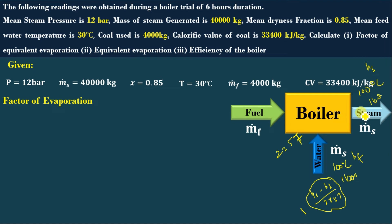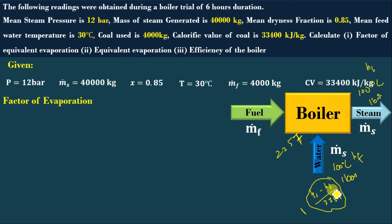For example, if the outlet steam condition is different from 100°C — say 250 or 300°C — then the factor of evaporation will be greater than 1. If the pressure is different also, it will be greater than 1. But for the same pressure, if it is wet steam, the factor may be less than 1. The factor of evaporation formula is: F = (Hs − Hf) / 2257.